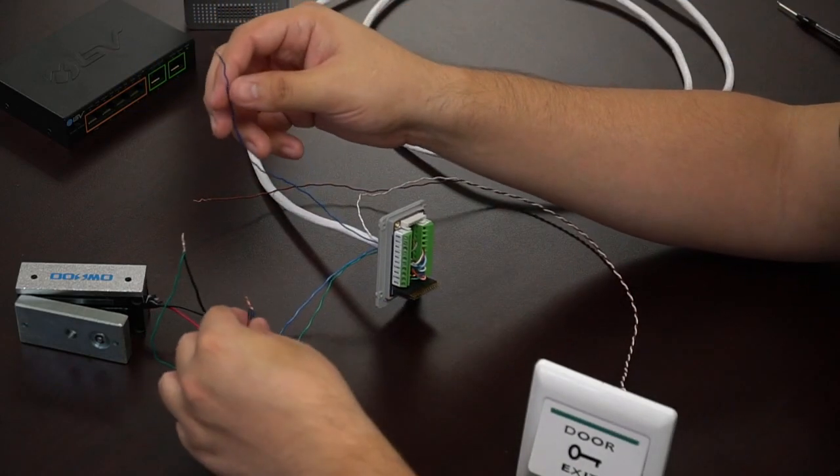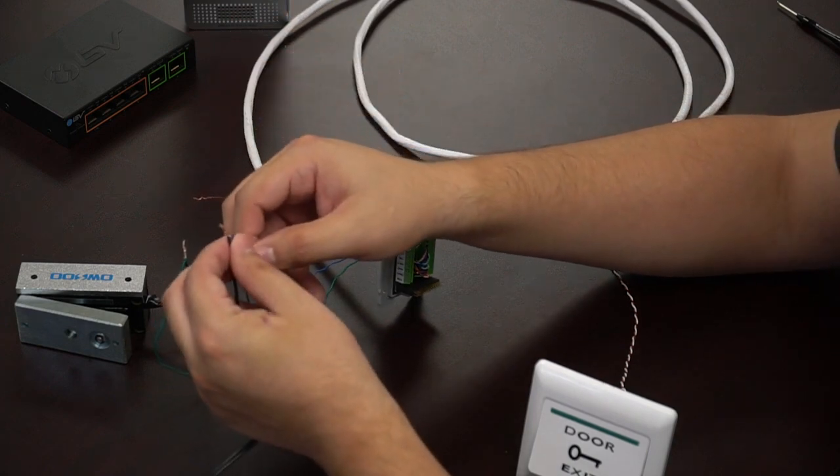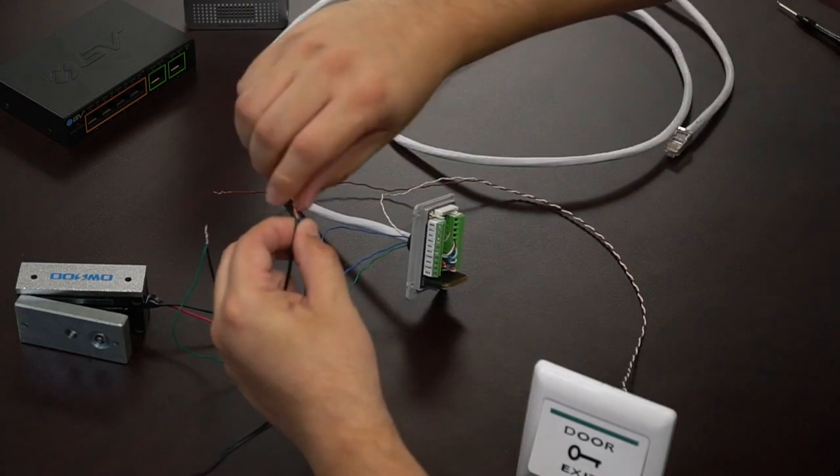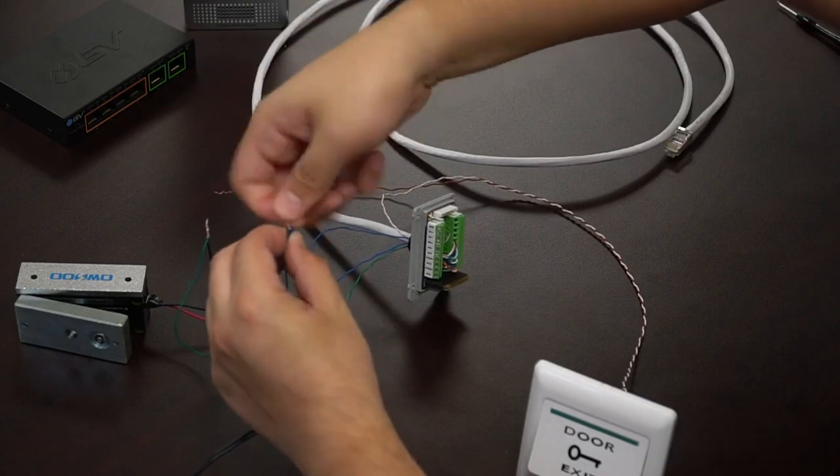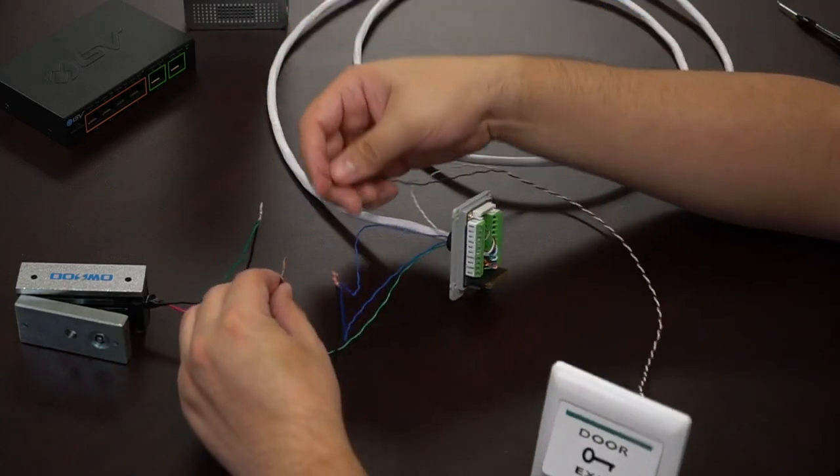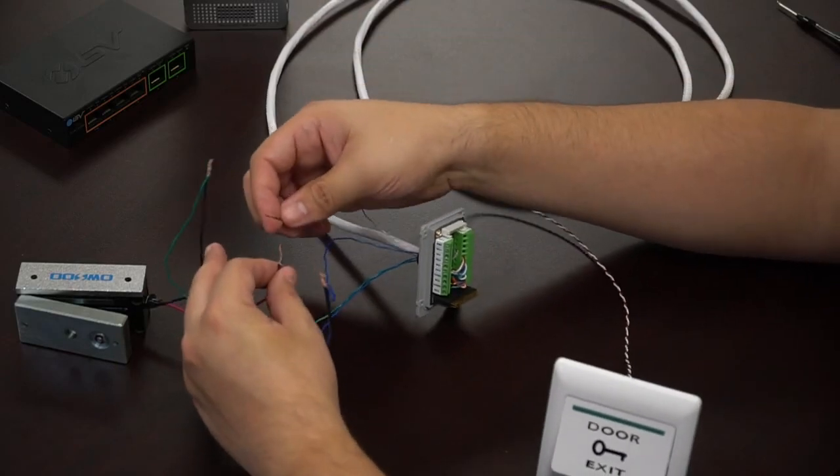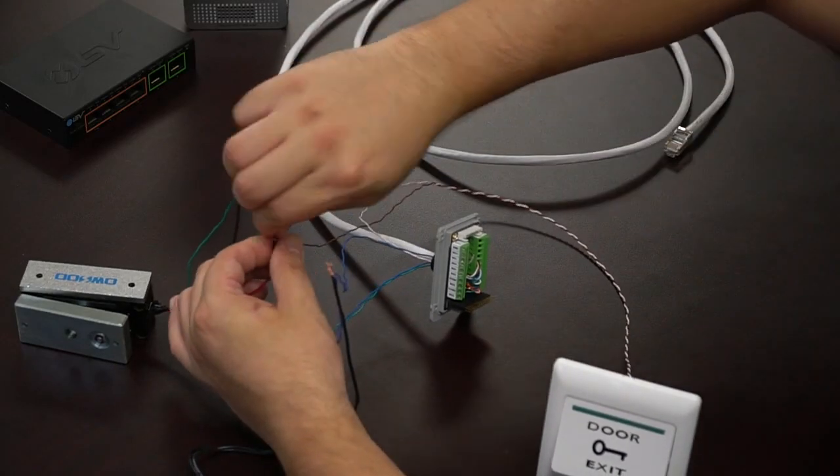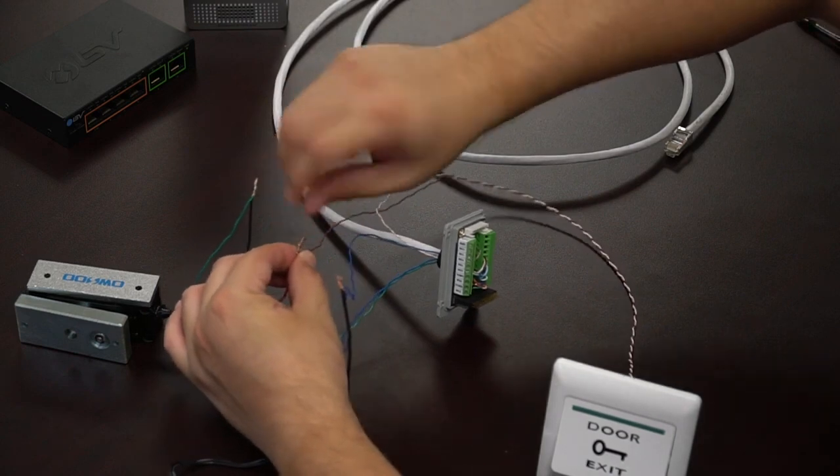Now, from there, we're going to take that blue wire that's connected to the N1 negative and connect it to the ground of the power supply. Now, we're going to be taking the other wire of that switch and twisting it up and connecting it to the positive voltage of the MagnaLock.